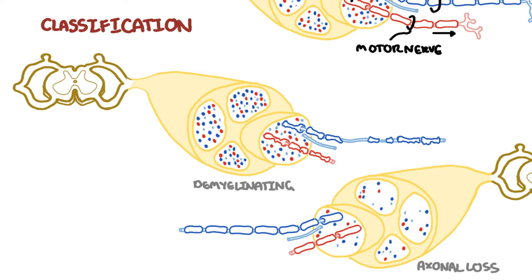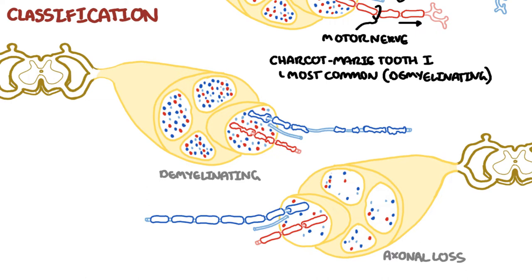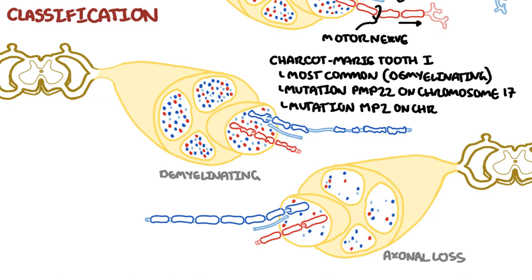Charcot-Marie-Tooth type 1 is the most common and is the demyelinating subtype. It causes injury to the myelin sheath that wraps around the neurons to speed up the signals. This is caused by mutation of PMP22 on chromosome 17, or less often MP2 on chromosome 1, about 5%.